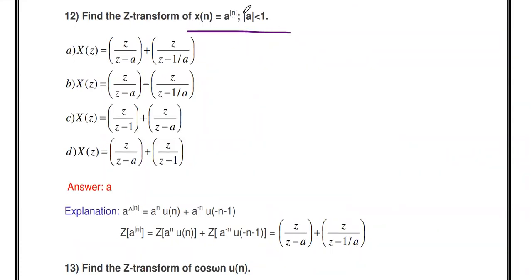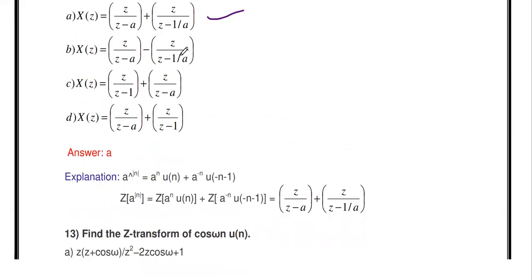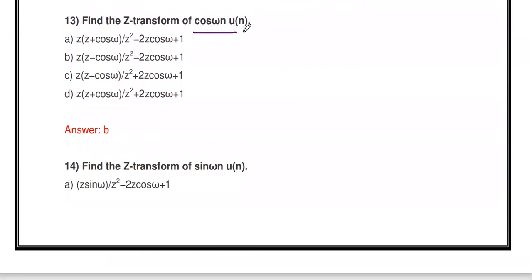Find the Z-transform of x[n] = aˡⁿˡ, where |a| < 1. This is an important big question in this unit. This is a double-sided exponential signal. The answer is X(z) = z/(z-a) + z/(z - 1/a).